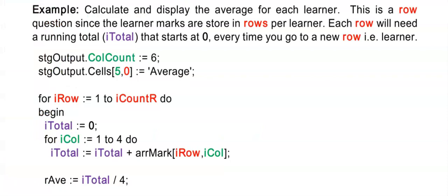Now we're getting to a calculation where we do a calculation per row. For example, the question could say: calculate the average for each learner. The learners' marks are in a row, so therefore it's a row question. You need to start with a for loop for the row. For column questions we're going to start with a for loop for the column. I want to display this output in another column right next to the learner's name and all four marks, so I have to have an extra column for my column counter.